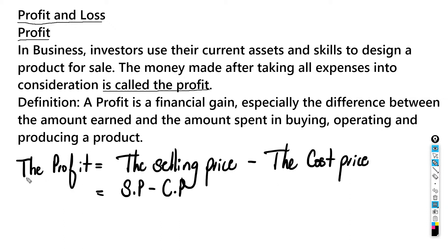The formula is: Profit = Selling Price minus Cost Price, abbreviated as SP minus CP. This is the simplified version of what profit is. I'm sure you've made some type of profit in your life — you bought something and sold it for more, like buying a pen for $50 and selling it for $100.